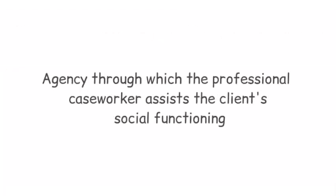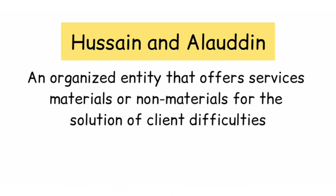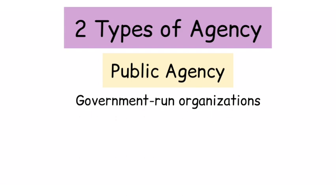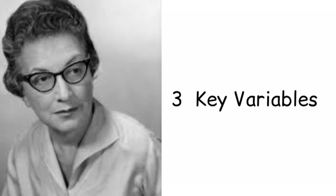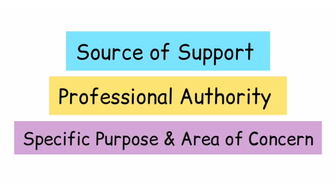The next element is place. The agency through which the professional caseworker assists the client's social functioning is referred to as the place. According to Hussain and Aladin, a social casework agency is an organized entity that offers services — materials or non-materials — for the solution of client difficulties. There are two types of agencies: the public agency, which refers to government-run organizations, and the private agency, which refers to organizations funded by voluntary contributions and government assistance. According to Perlman, agency categorization is determined by three key variables: source of support, professional authority source, and specific purpose and area of concern.